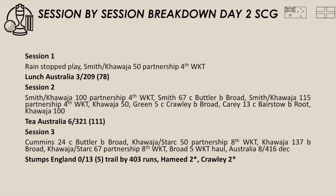Khawaja brought up his half century on his test return and Cameron Green got out for 5, caught Crawley, bowled Broad. Then Alex Carey was the last wicket to fall for Australia in the second session just before tea, for 13, caught Bairstow, bowled Root. Khawaja then brought up his century on his return to the Australian test side just before tea, to take Australia to 6 for 321 at tea.